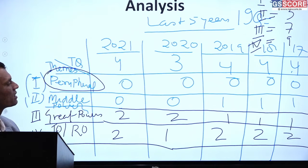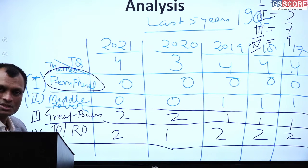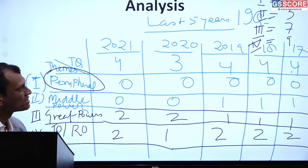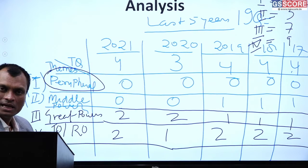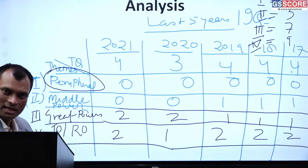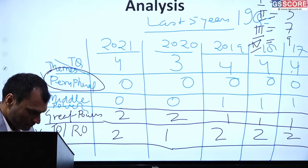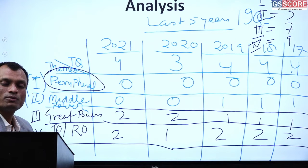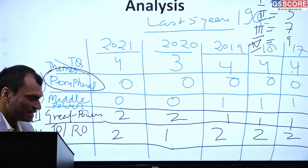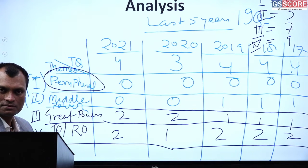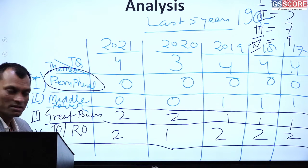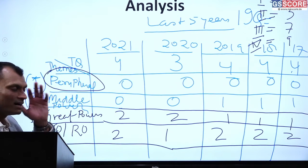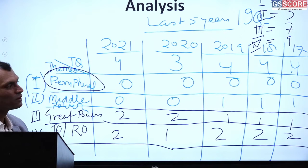With this, we will cover the entire trend analysis session. We will have one session each on themes 1, 2, 3, and 4, understanding how exactly to approach each. After completing 4 theme sessions, we will go question-wise through the last 5 years questions. The mandate is clear: focus most on theme 4, followed by theme 3, then theme 2, and lastly theme 1. Theme 1 will come last when studying and focusing.